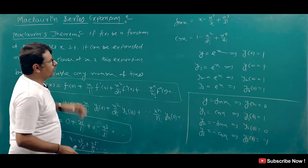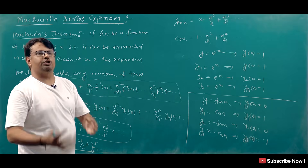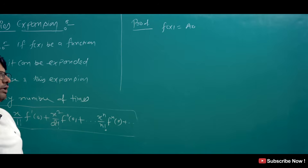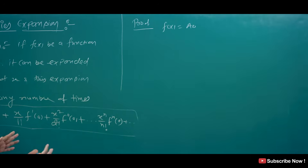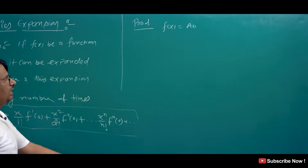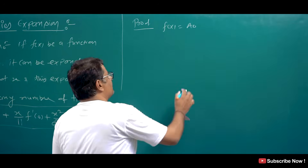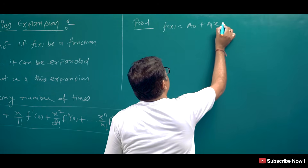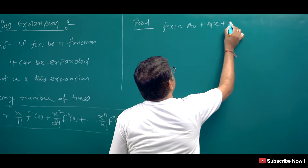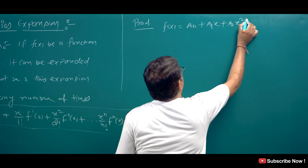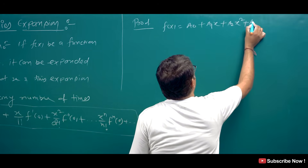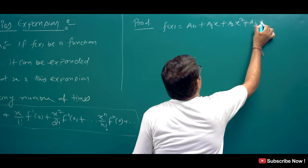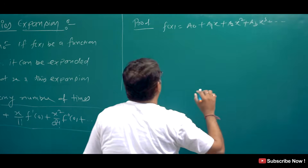Now I will show you the proof of Maclaurin's theorem. We assume f(x) can be written as: a₀ + a₁x + a₂x² + a₃x³ + ... We take this integral form and differentiate to find the coefficients.